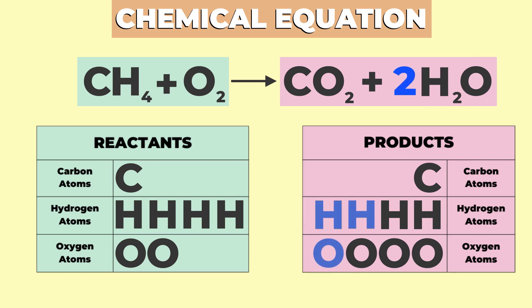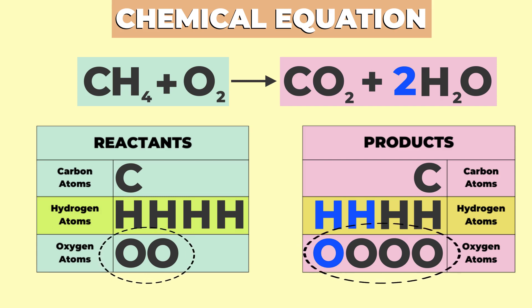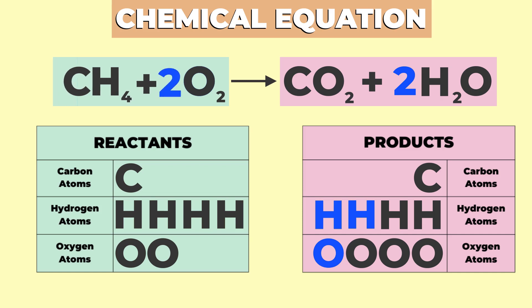Now we have four hydrogen atoms on the reactant side and four on the product side. But the reactant side has two oxygen atoms while the product side has four. To fill this gap, we need four molecules of oxygen on the reactant side. We use the coefficient two to show this in the chemical equation. The equation is now balanced and follows the law of conservation of mass.